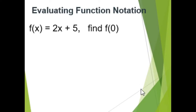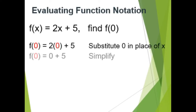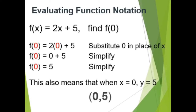Now it's your turn. Evaluate function notation f of x equals 2x plus 5. Find f of 0. You can pause the video to answer. We need to substitute 0 in place of x and then simplify. The ordered pair is (0, 5).